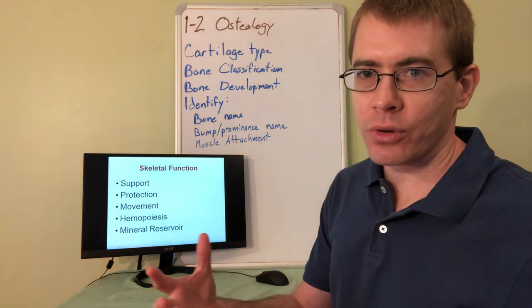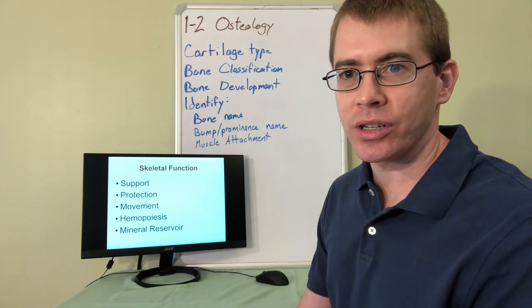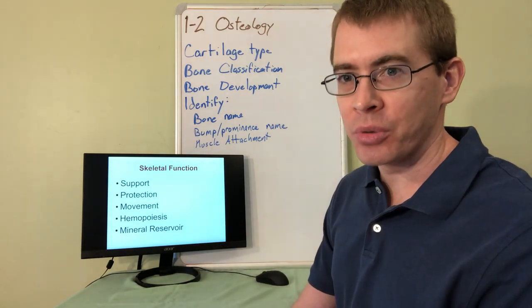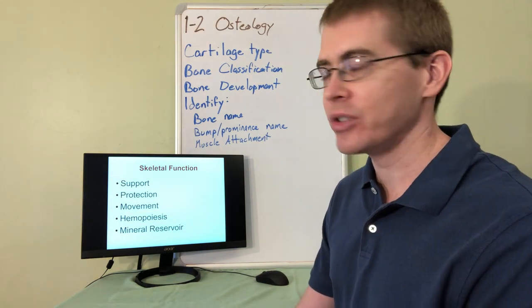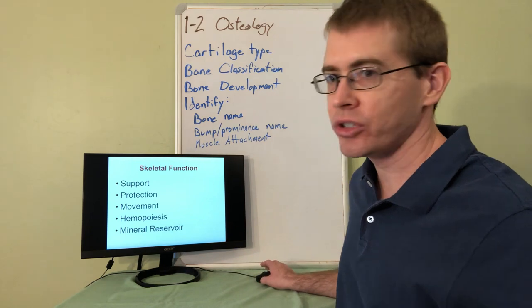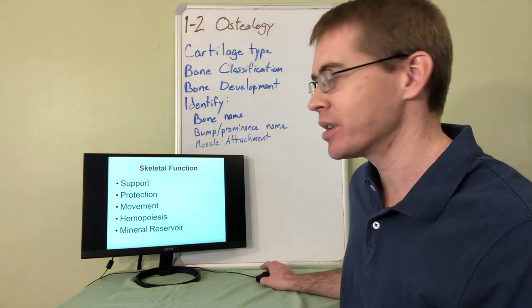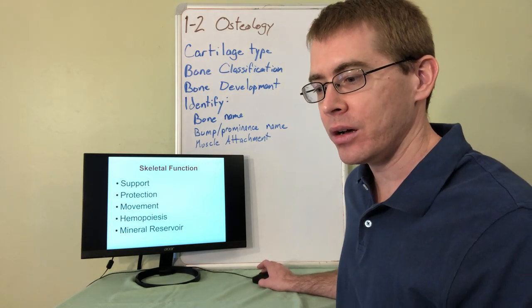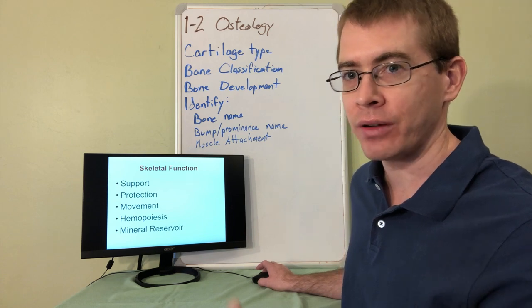So first of all, of course the skeleton has a function. This is anatomy undergraduate stuff. The skeleton supports, protects, provides movement based on the joints, is a reserve for minerals such as calcium and phosphates, and is the source of hematopoiesis where blood cells differentiate before they travel to the rest of the body.